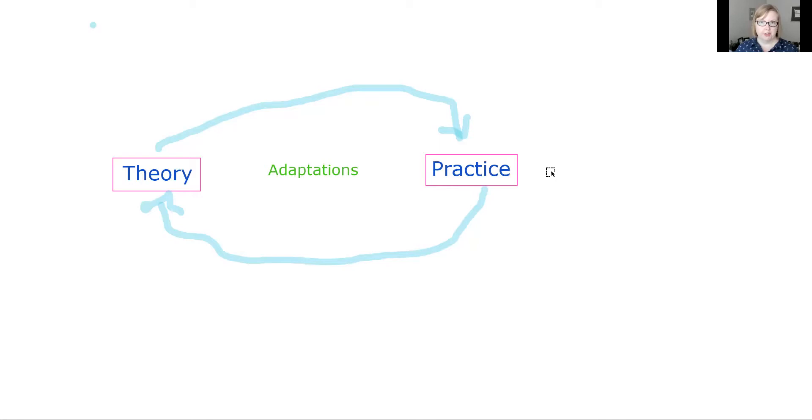So all of those examples are how we take our general theory and say, how do we make this work in practice for this person? And when you can do that, that is demonstrating critical thinking because you are showing that you can apply the appropriate adaptations that will get you to practice from theory.